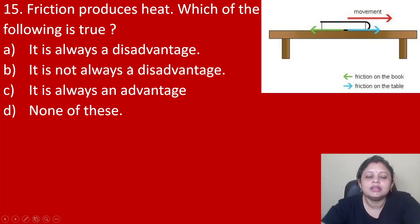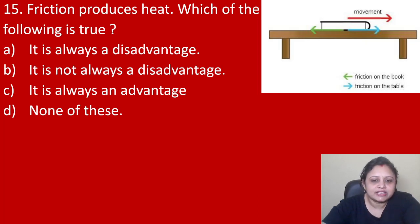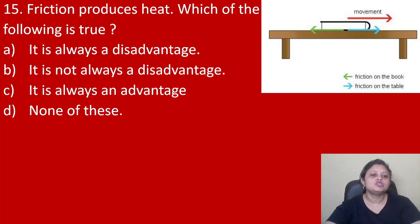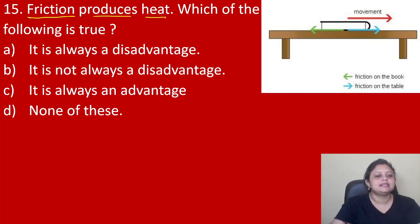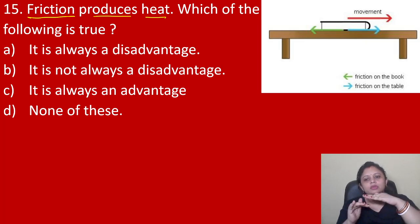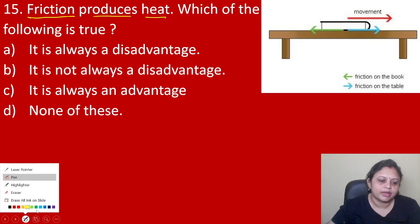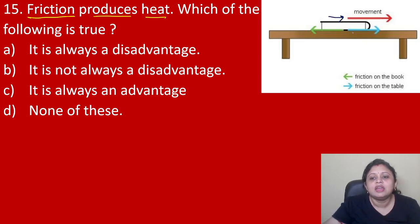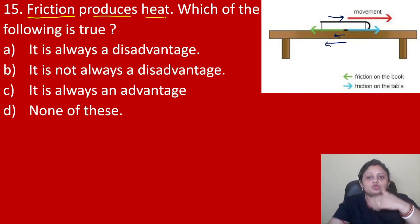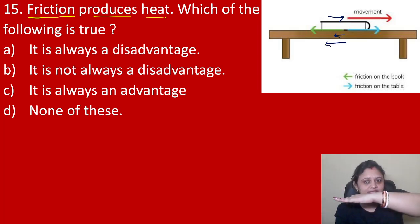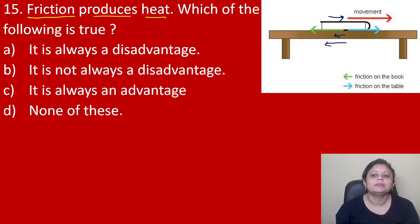Coming to the last question of today's session: friction produces heat — which of the following is true? Option A it is always a disadvantage, B it is not always a disadvantage, C it is always an advantage, D none of these. When one body is moving, friction is given to the body by the surface in the opposite direction. This friction produces heat. It is also a disadvantage because in machines, when machinery parts undergo friction it produces heat and slowly damages the machine parts.